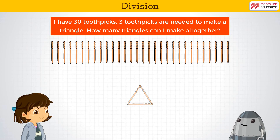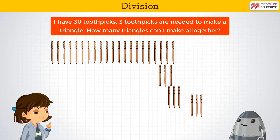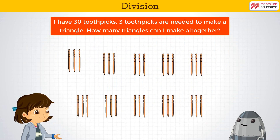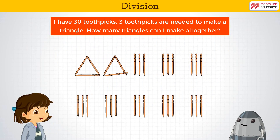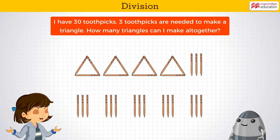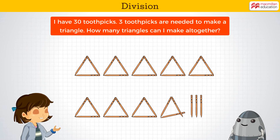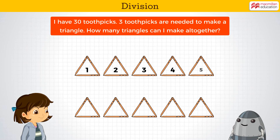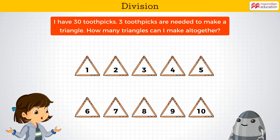Let's now make groups of three to find out the answer. Observe how the toothpicks are grouped together to form the triangles. Can you count how many triangles are formed? I think we have 10 triangles here. Brilliant!